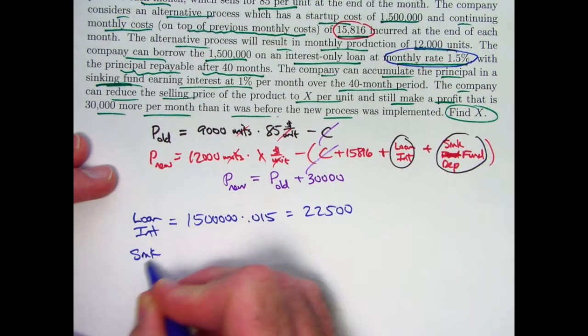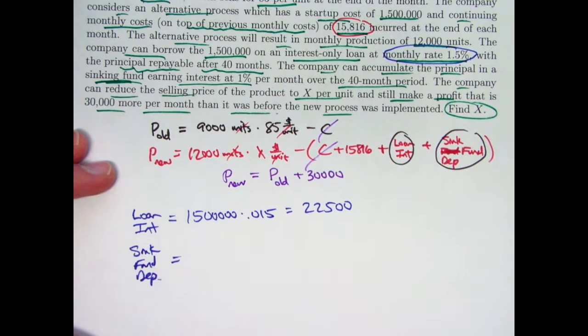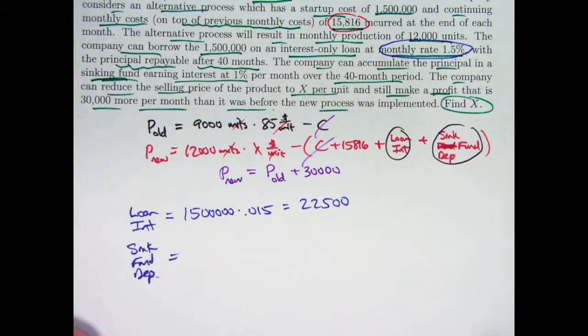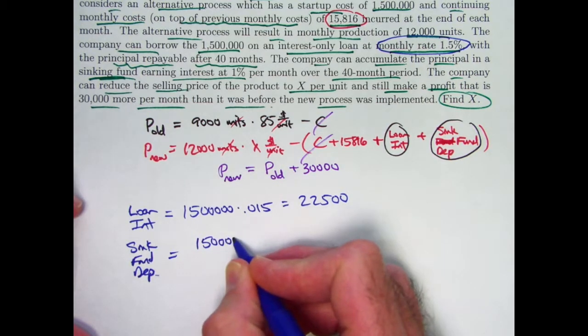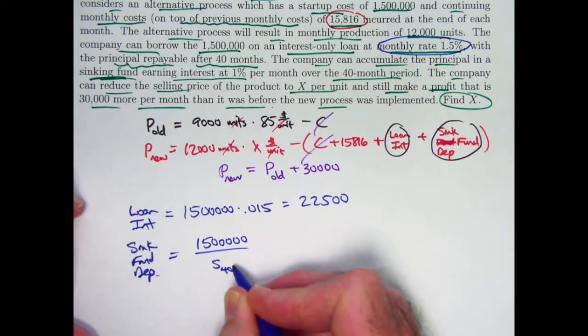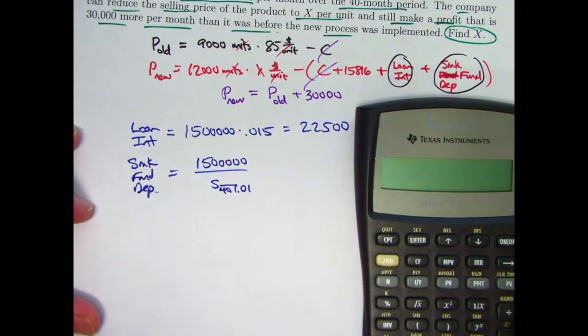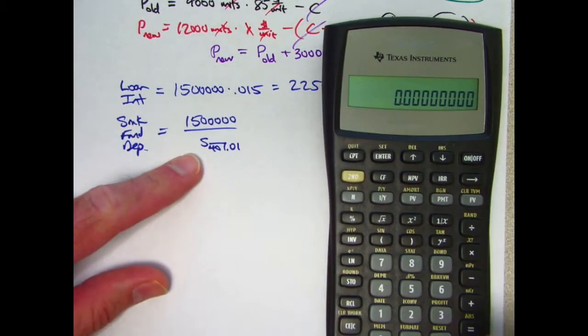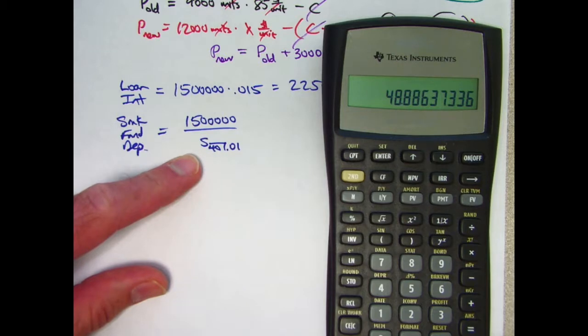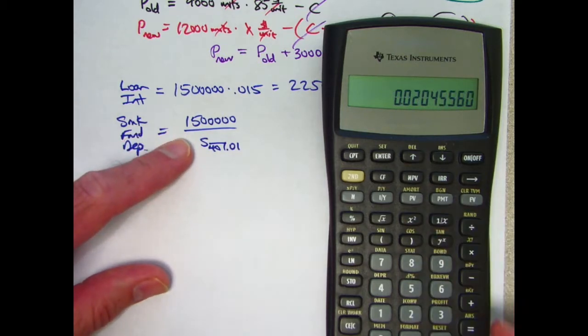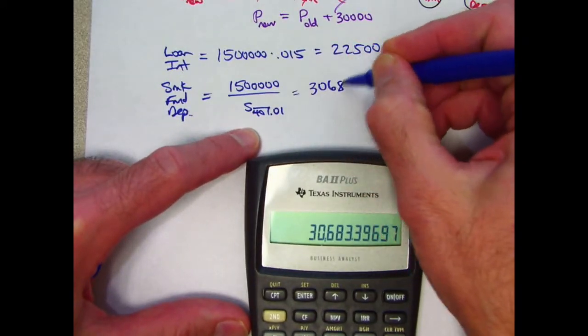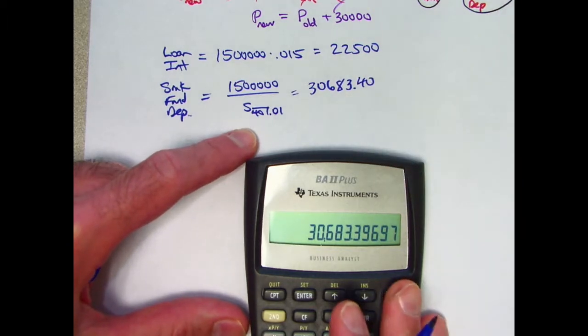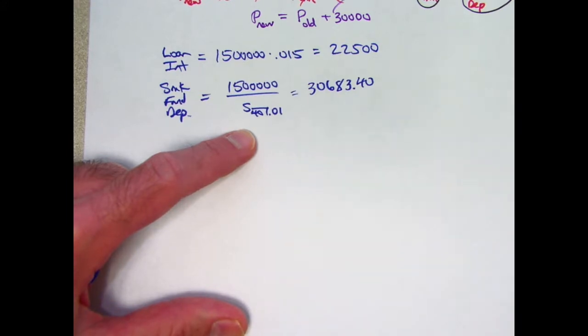How about the sinking fund deposit? We want the sinking fund to accumulate to $1.5 million by the end of 40 months. You can set up an equation of value and solve for the deposit that occurs every month. It will end up being $1.5 million divided by S_40 with interest rate 0.01. Let's find S, take 1.01, raise it to the 40th power, subtract 1, divide by 0.01. That thing needs to be divided into $1.5 million. So take its reciprocal and multiply by $1.5 million, $30,683.40. And I think I will go ahead and round right away here. It's not going to be a real big deal to help us find X.